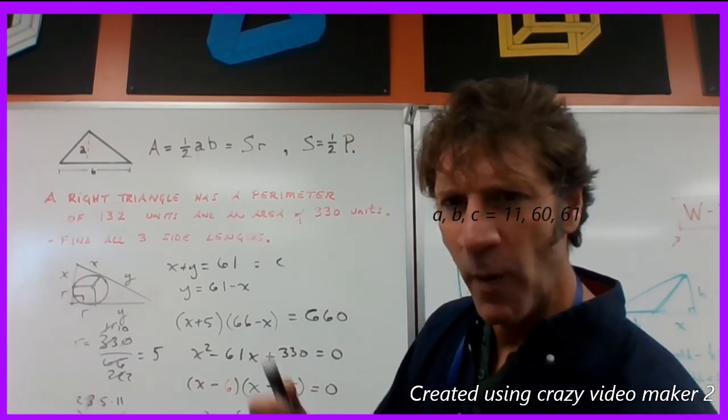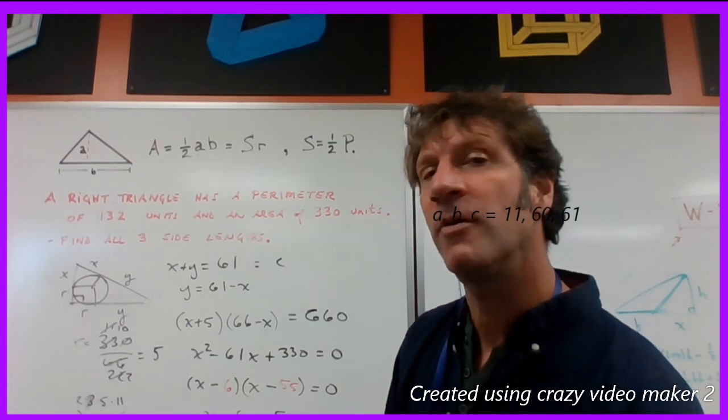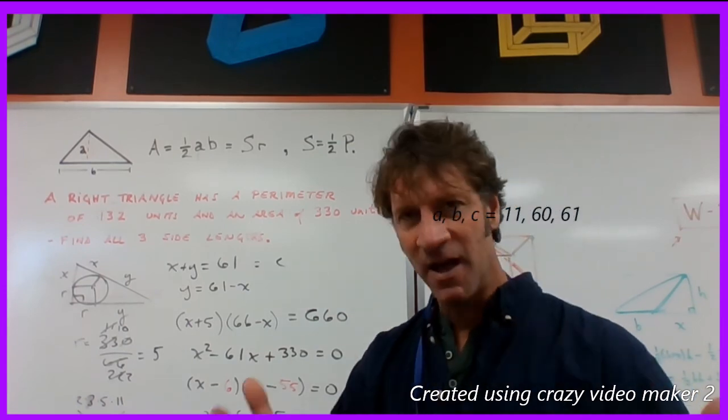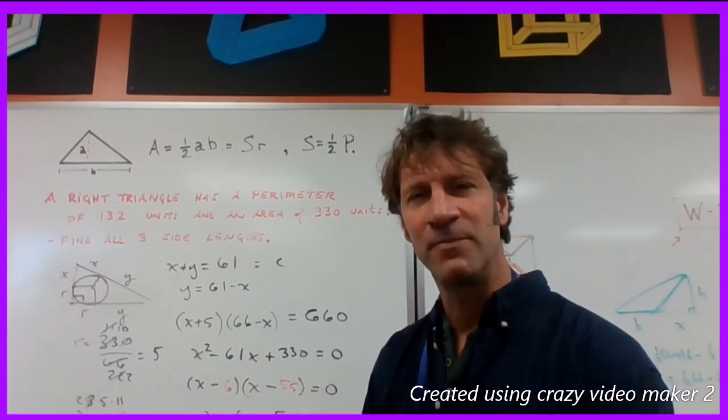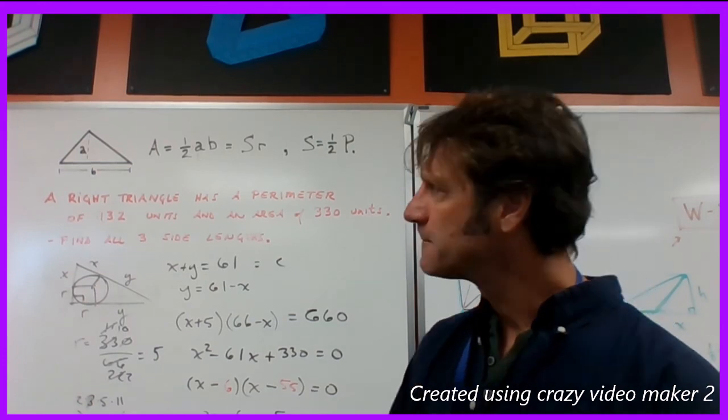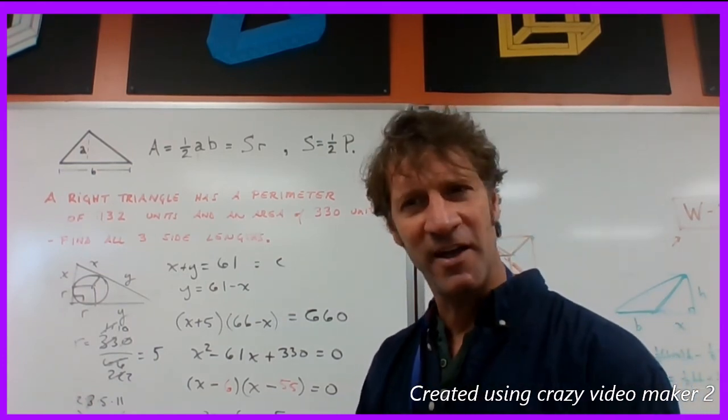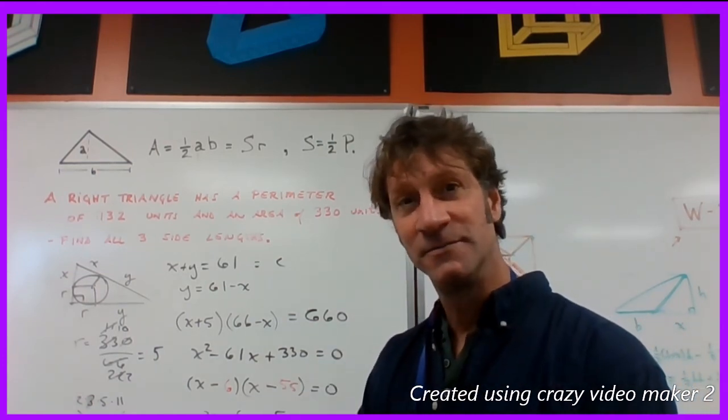So feel free to watch this again. That's a way to do this. We're working with factorable quadratics that we're finding out of this information about perimeters and areas of right triangles using the inradius formula. Thank you.